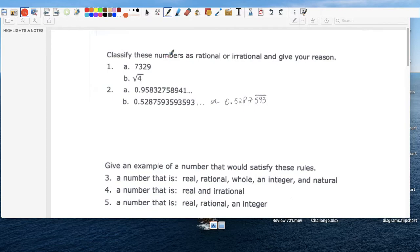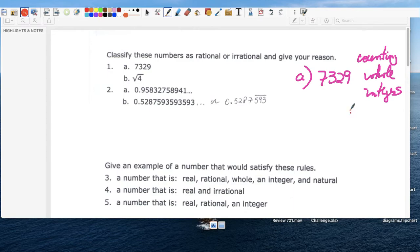Number one, classify these numbers as rational or irrational and give your reason. 7329, it's a rational number because it's part of the counting set, part of the whole number sets, part of the integers. Our definition of rational number is if we can write it as a ratio of two integers, a over b, where a is an integer and b is an integer, then it's a rational number. So 7329, can I write it? Yeah, I can write it as a ratio of two integers, there you go.